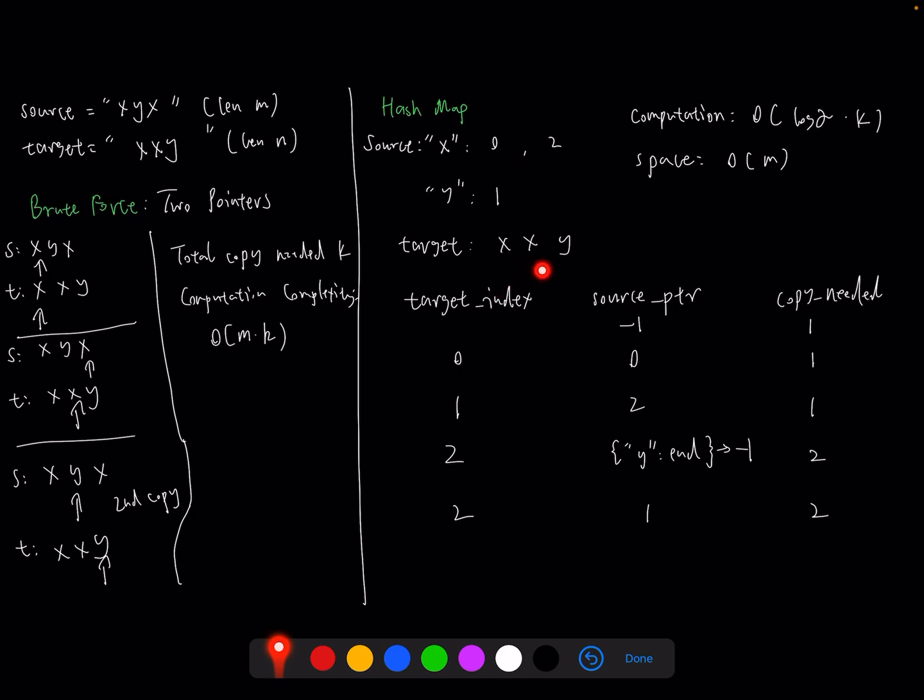Then we still have pointers here, but we are able to do a binary search for the next character so that we don't need to iterate the complete source string. Let's take this XYZ example again. So let's put our source pointer as minus one, which means we haven't started iterating yet. At the start we only have one copy from the source. Then when we point to the first index of target, the target string is X.